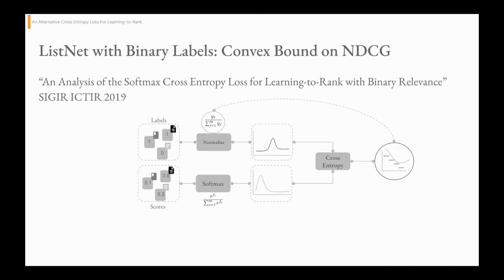It turns out that if we look at the ListNet loss, but instead of normalizing labels using softmax, if we adopt this particular normalization function, then it can be shown that the resulting loss function is actually a convex upper bound on NDCG if the relevance labels are binary.